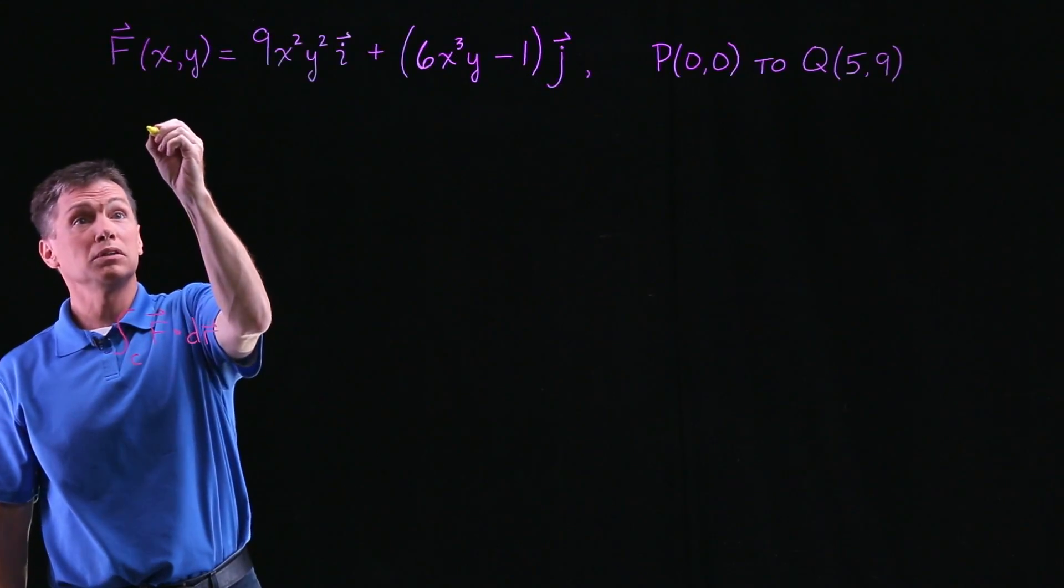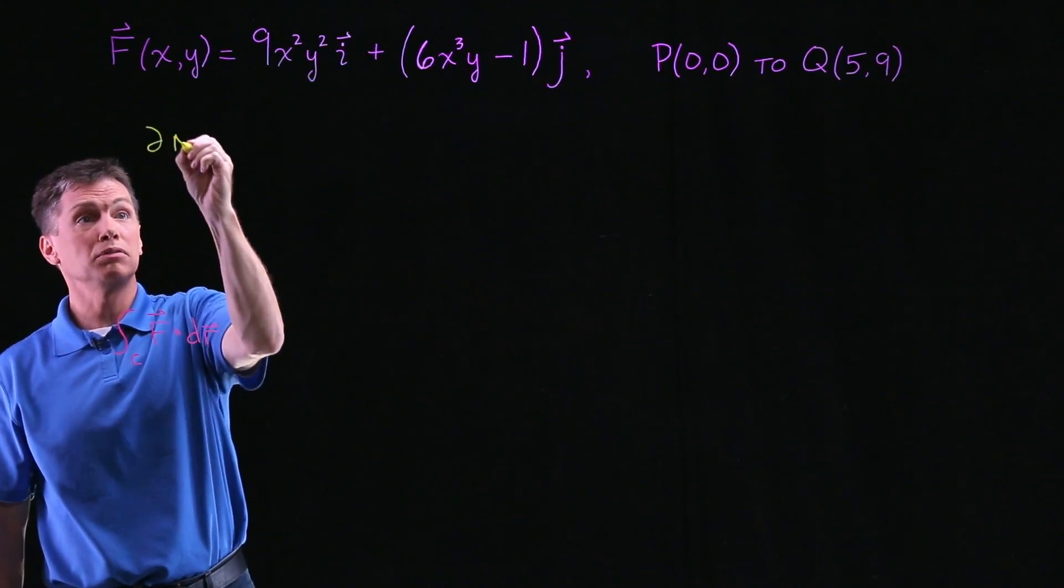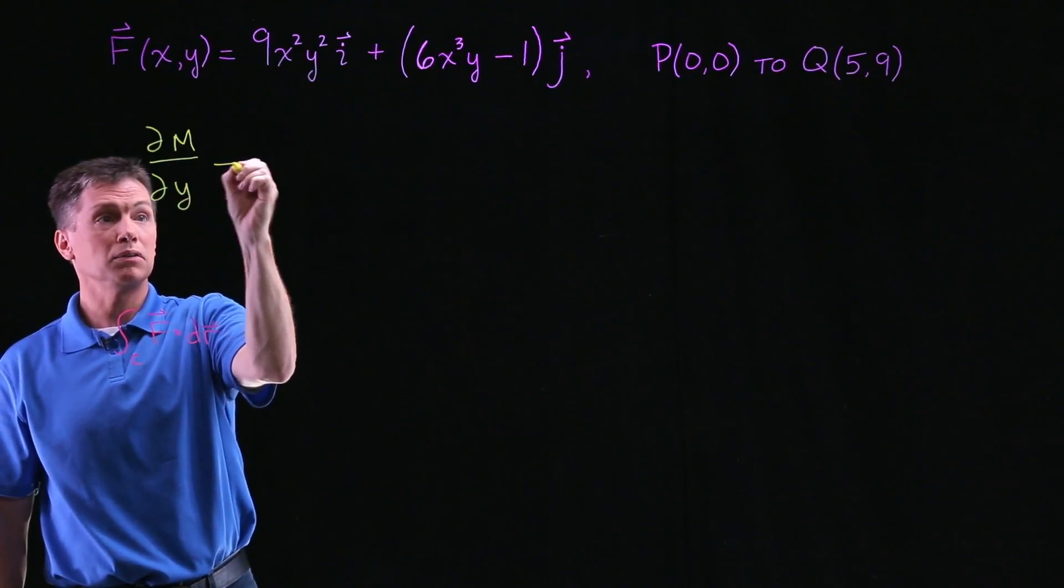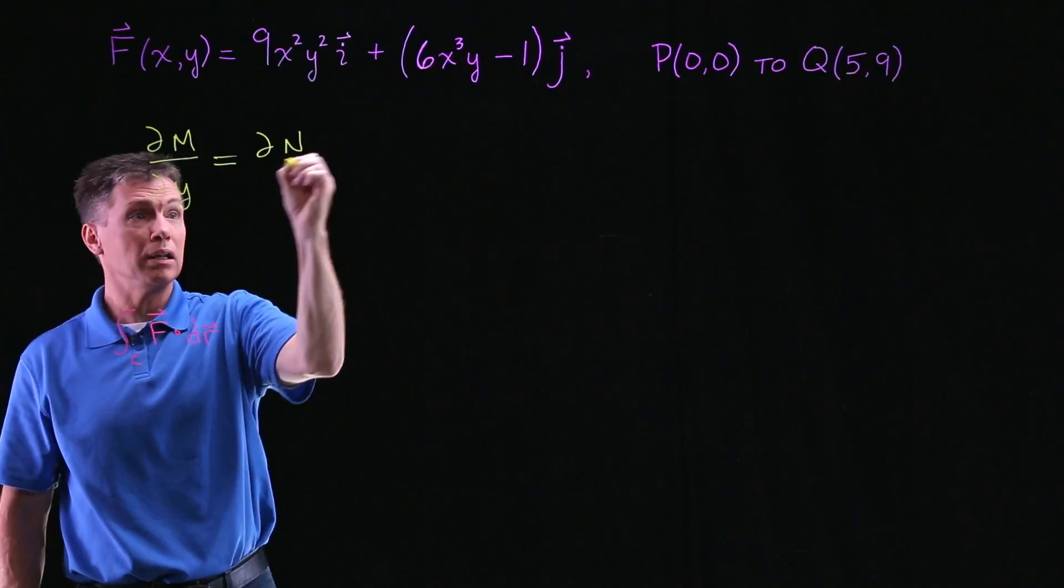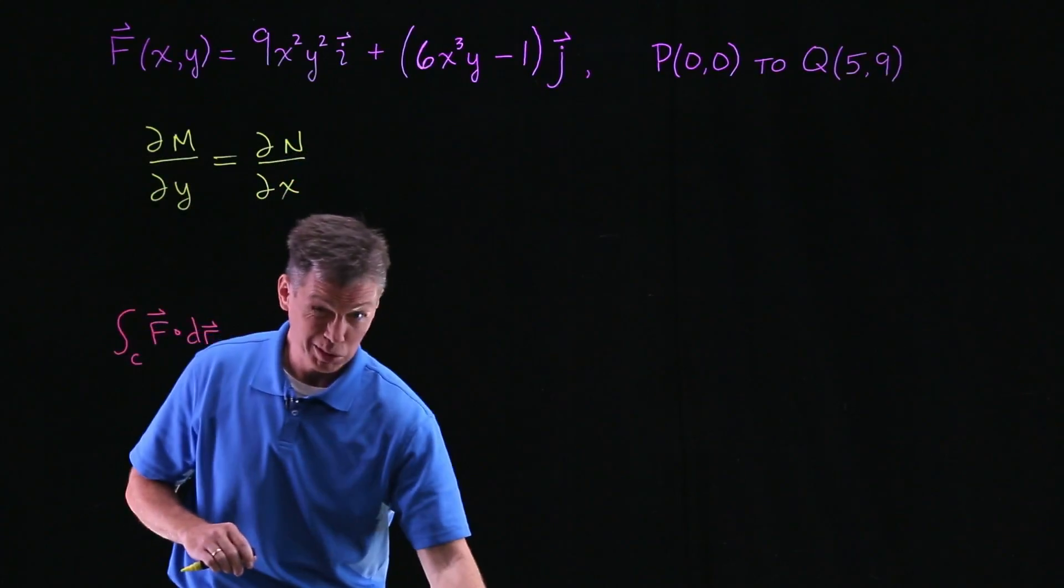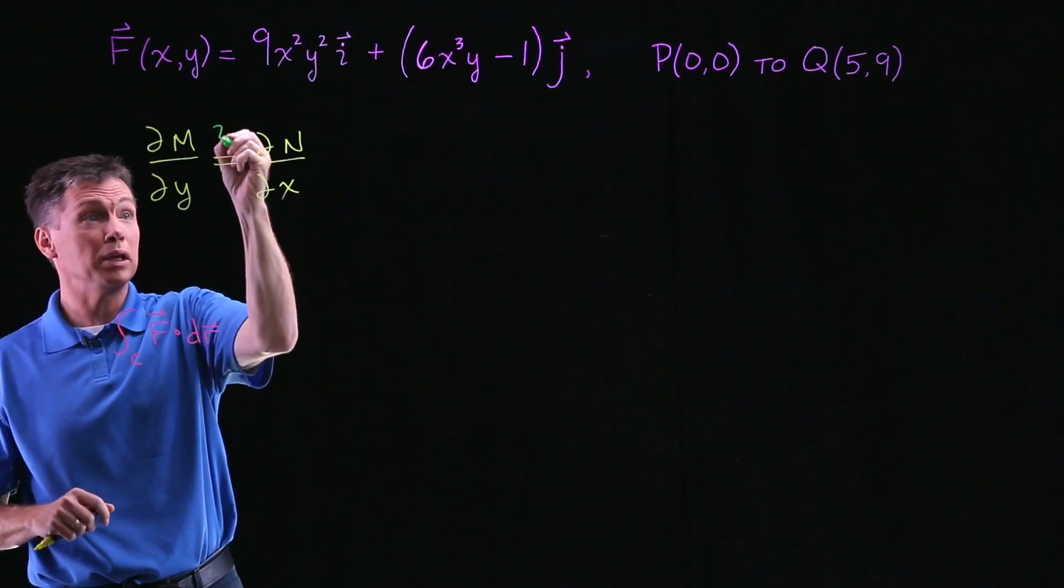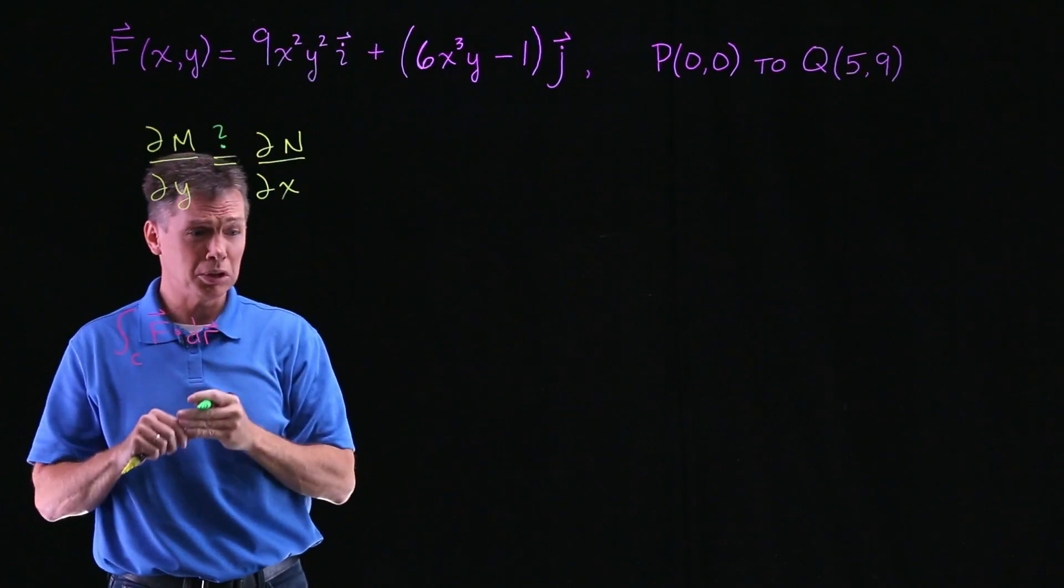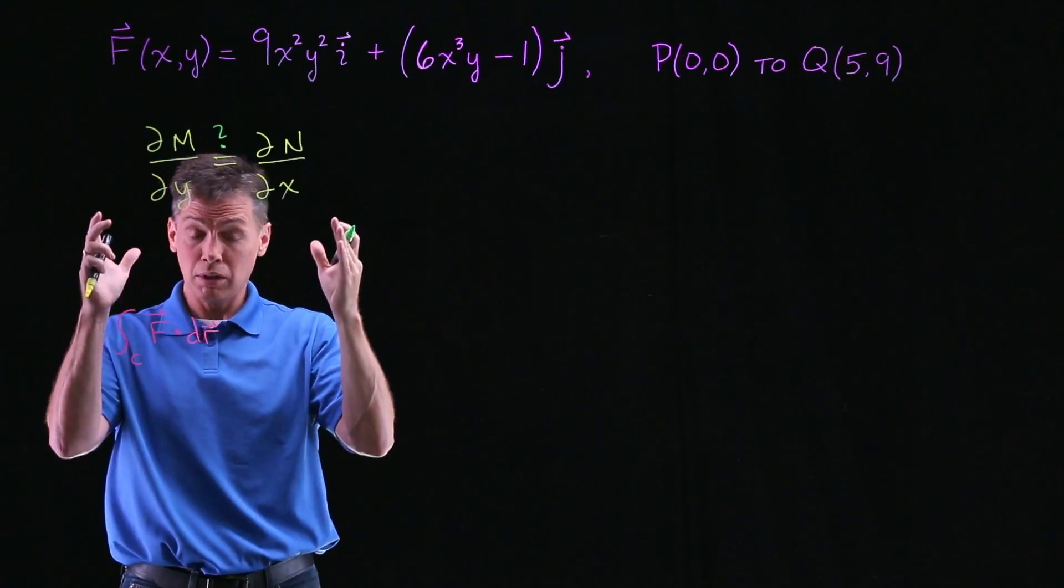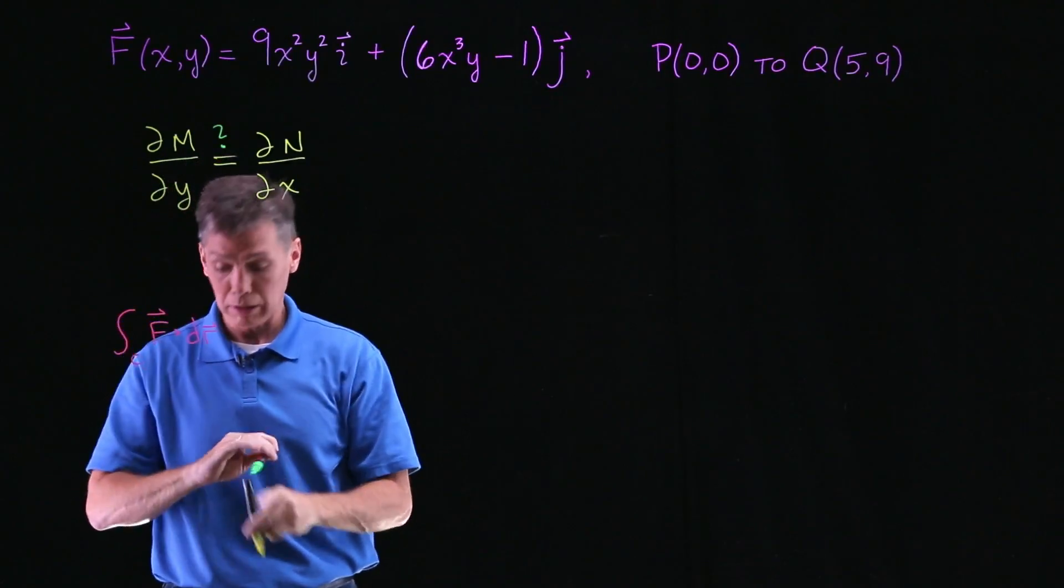If you remember how to check for that, I'll do that in this space right here. We're looking to see if the partial of M with respect to Y equals the partial of N with respect to X. I hope that looks familiar. You've done your homework on checking to see if a function is conservative, it's the same work.